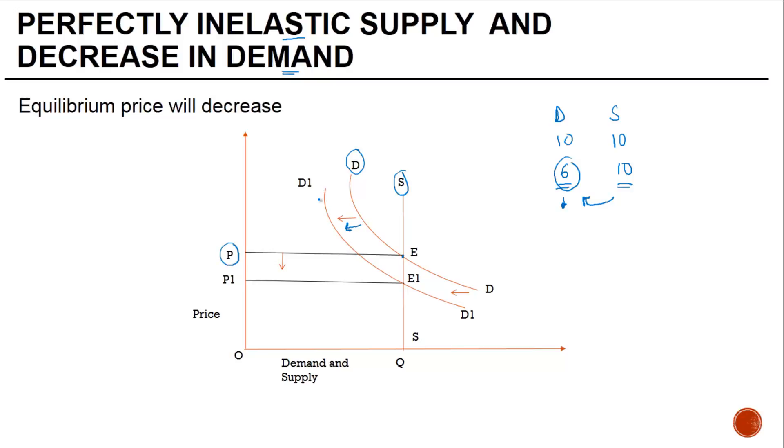The new demand curve intersects the supply at E1, and if I draw a parallel to this to the price curve, it becomes P1 which is less than P.